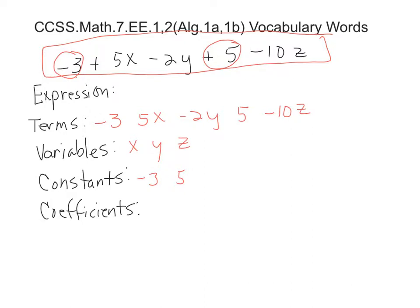Now coefficients are also numbers, and they're numbers only, but they are the numbers that are stuck on to the variable. So 5 is a coefficient of x. So coefficient means it works with something else. It's codependent. So 5 is the number only of 5x, that term.